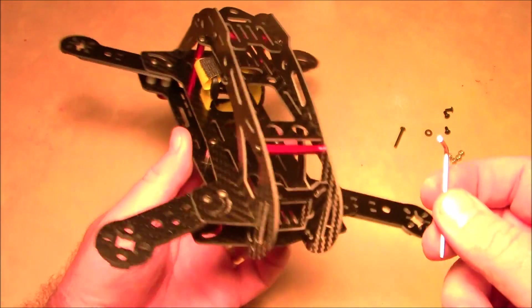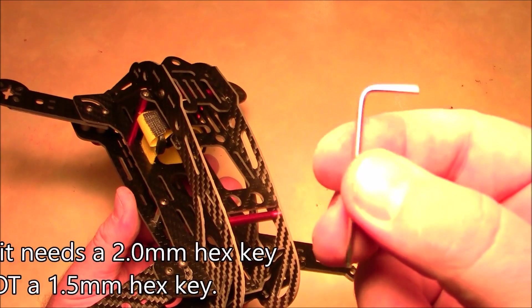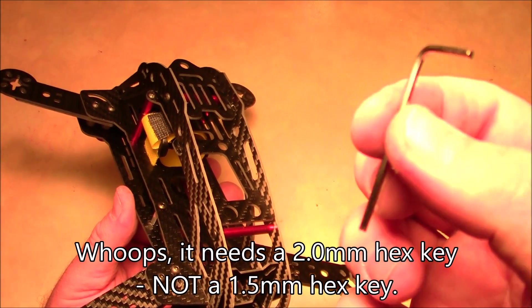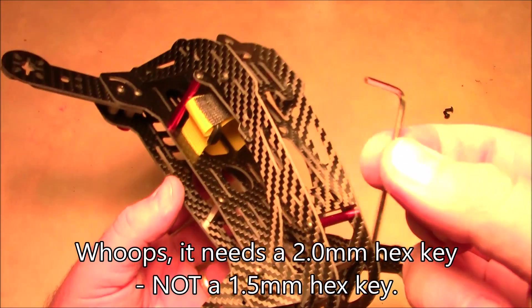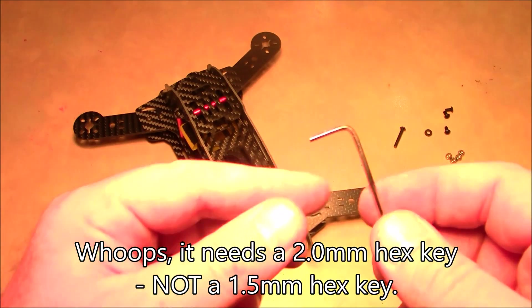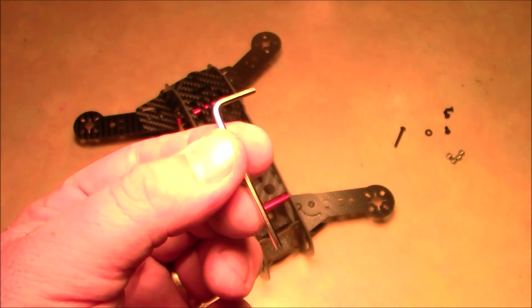Here's the completed frame. Everything on this quadcopter is put together with a 1.5 millimeter hex screw or hex driver or Allen wrench, whatever you want to call it. Now if you did what I said in the previous video, which is go on eBay and buy 10 of these, then you might want to do this with one of them.